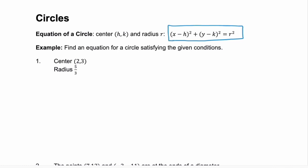So in example one, we need to find the equation for the circle that satisfies the given conditions. The center is at the point 2,3 and the radius is 5/3. Well if the center is 2,3 that means our h and k are h equals 2 and k equals 3, and our radius or r is 5/3.